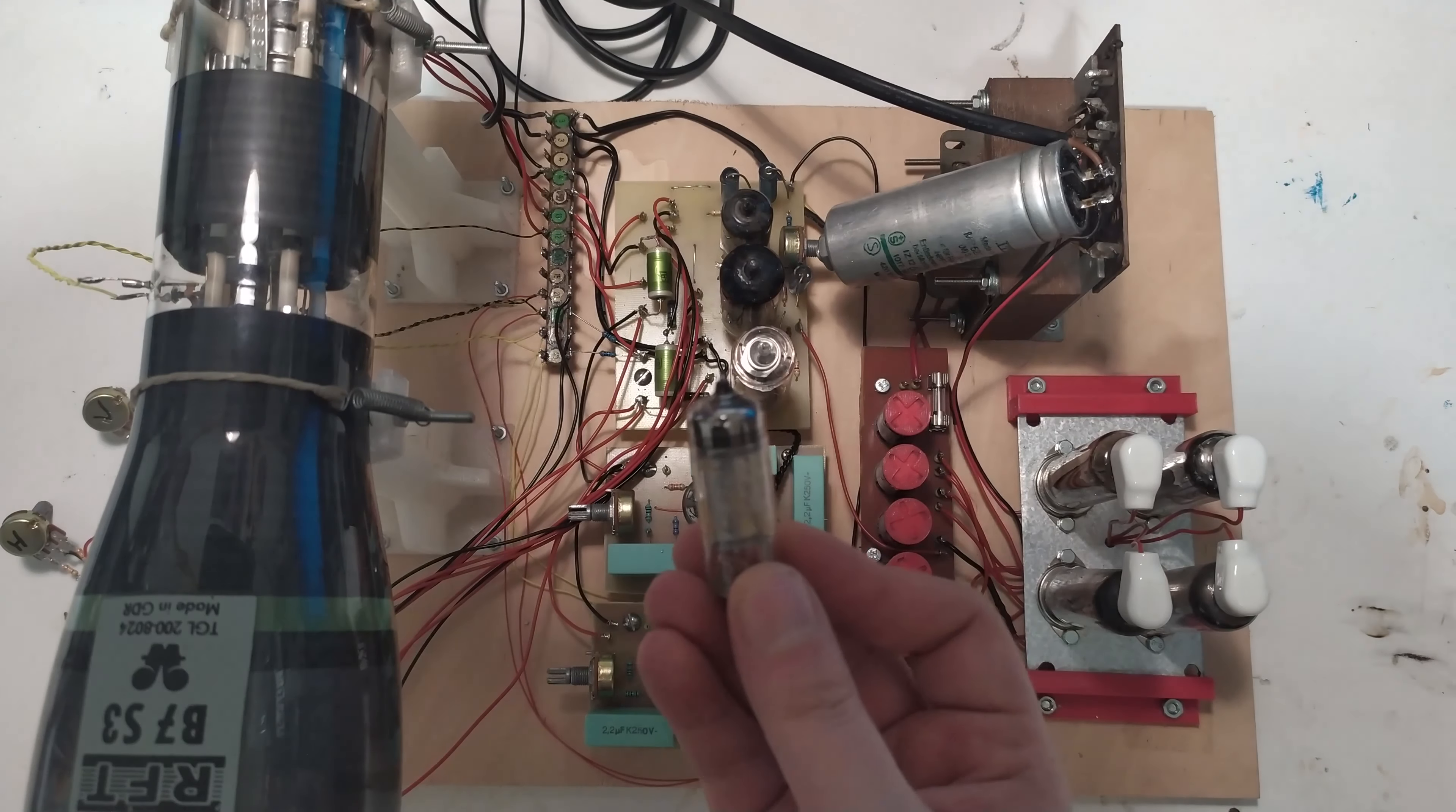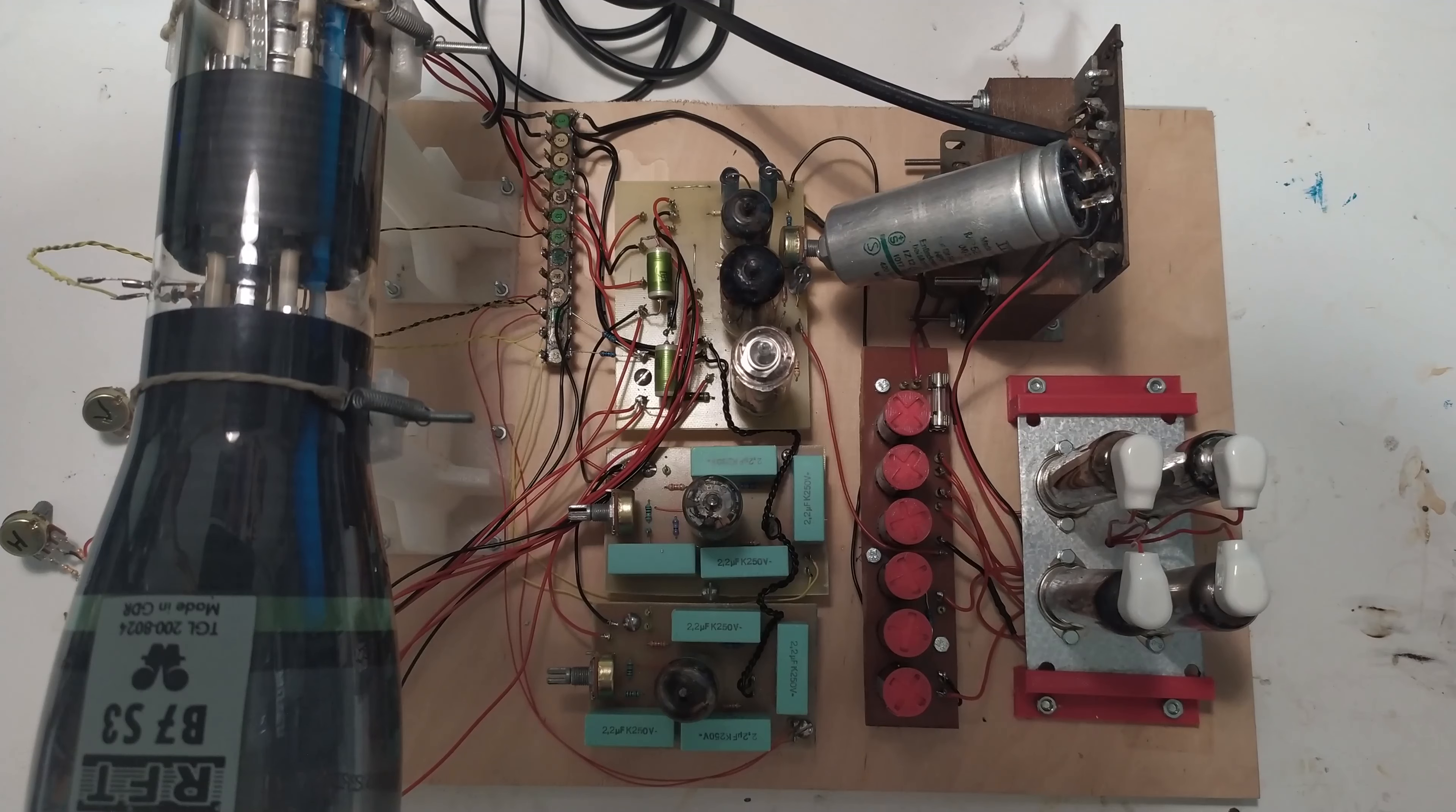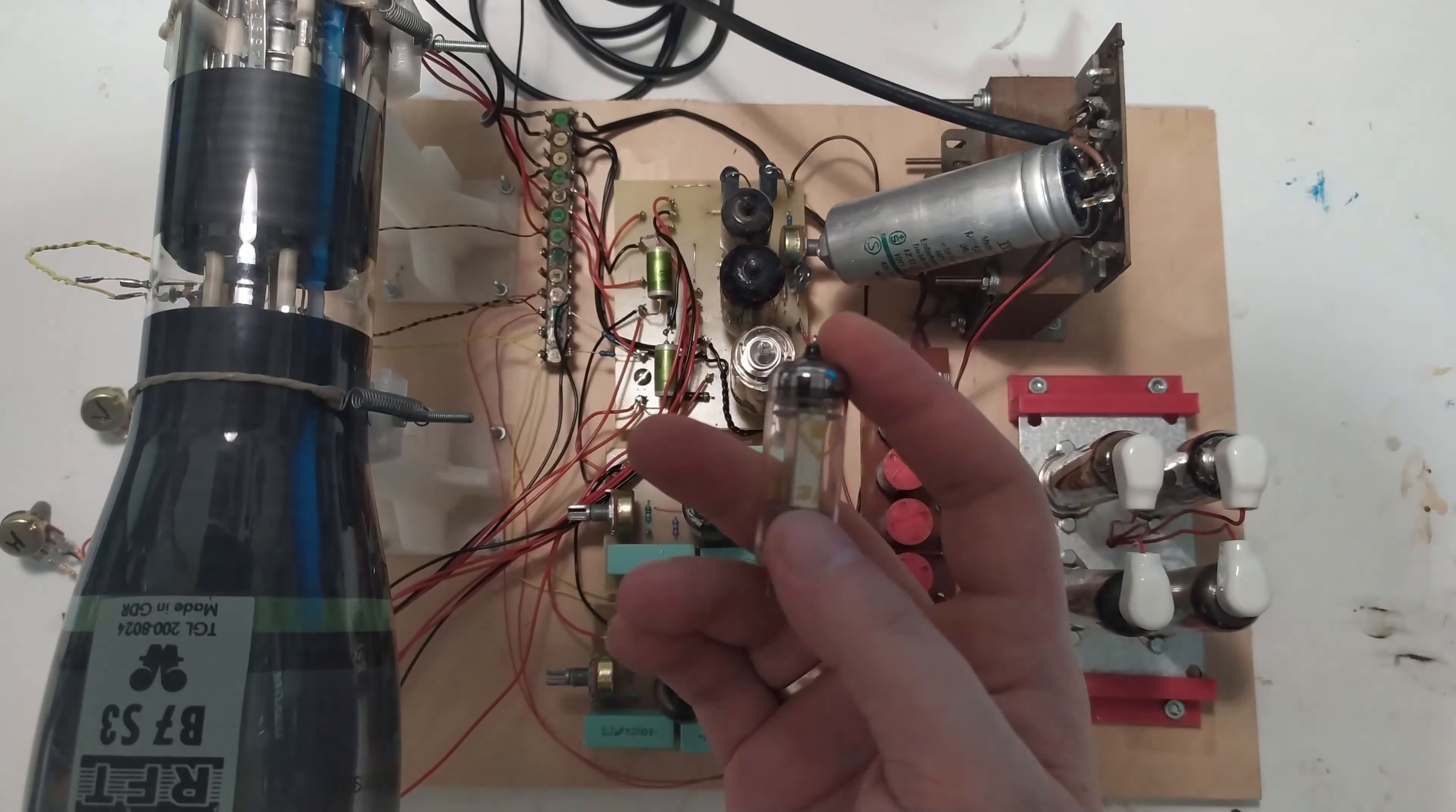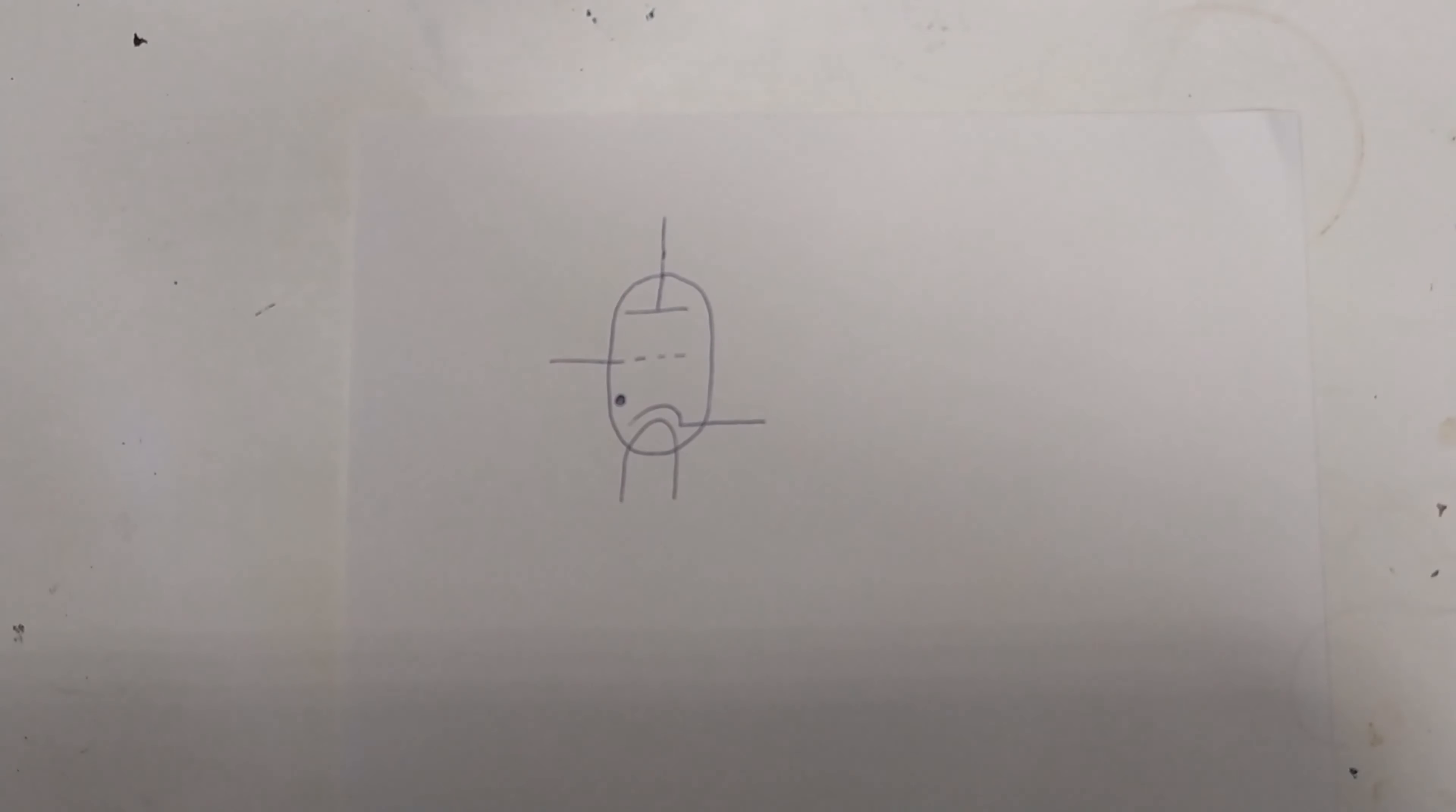So enter the thyratron. This tube doesn't only have a relatively cool name that derives from what people in the 20s thought people in ancient Greece would call a current gate or voltage gate. But it's also really useful for creating the sort of waveform we want. This is a gas-filled tube. If you look at this basic symbol it looks a lot like a regular triode but with a weird dot on it. That dot indicates the gas filling and it behaves quite differently from a triode.